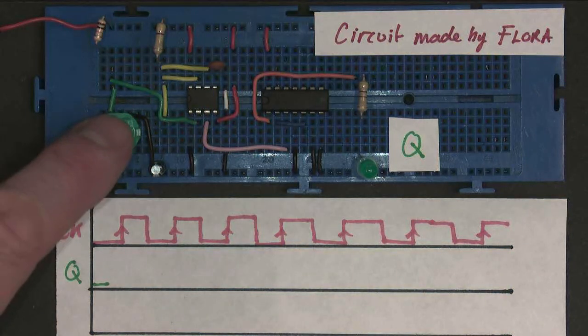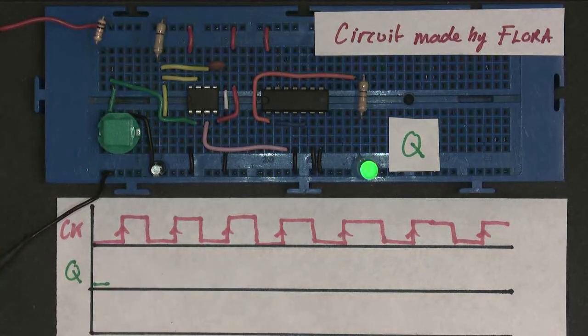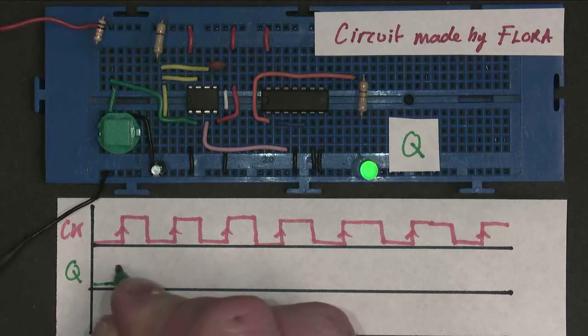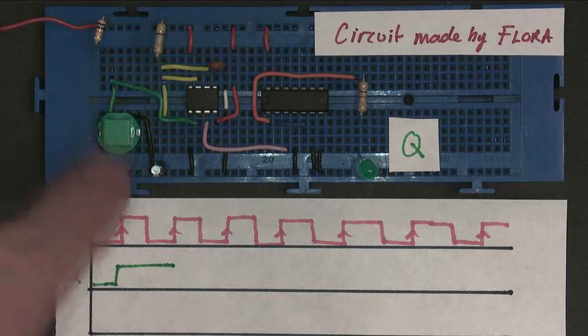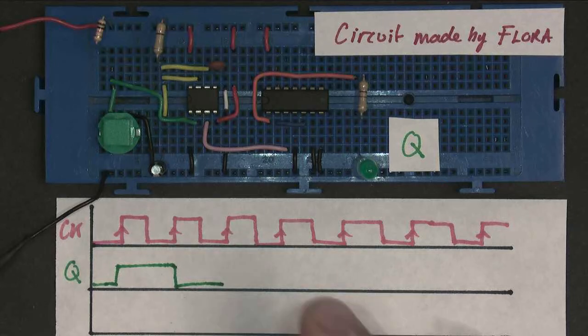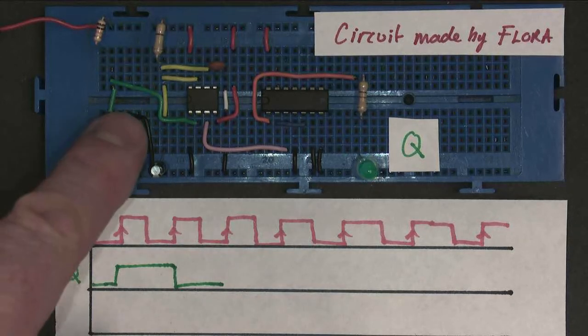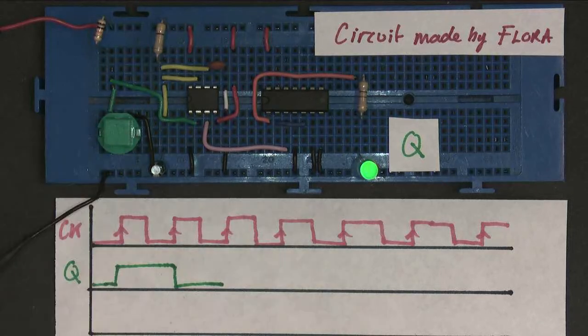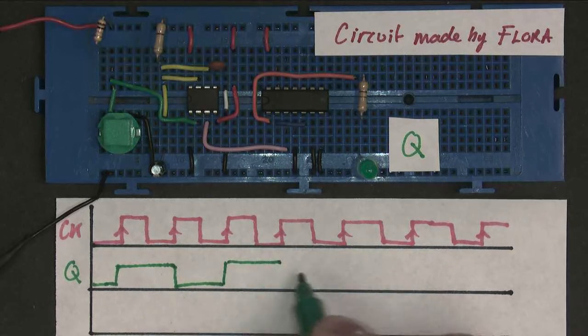So when I press the clock, which is this rising edge just here, Q comes on, so that's very good. When we press the clock again, Q goes off. And we press the clock again, and it goes on, we press the clock again, it goes off, and so on, and so forth. Every time we press the clock, the output changes state.